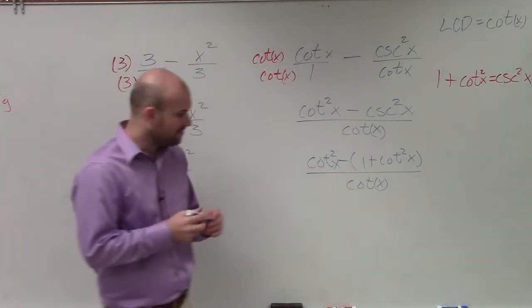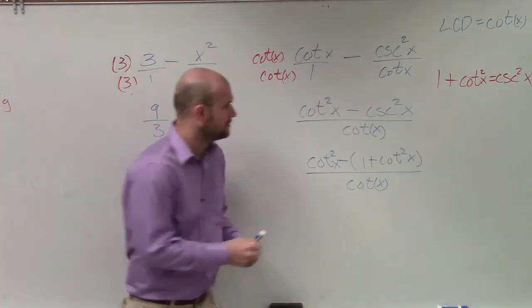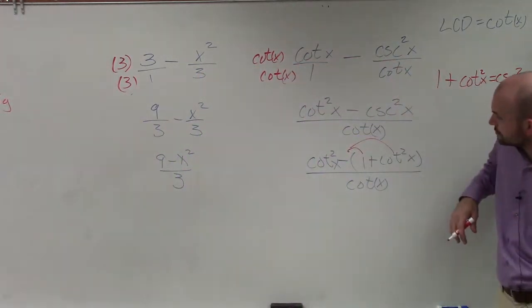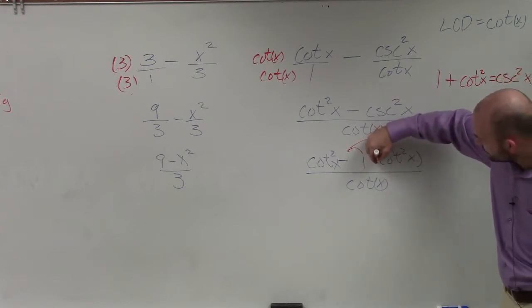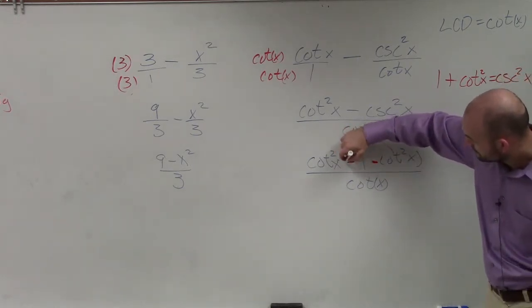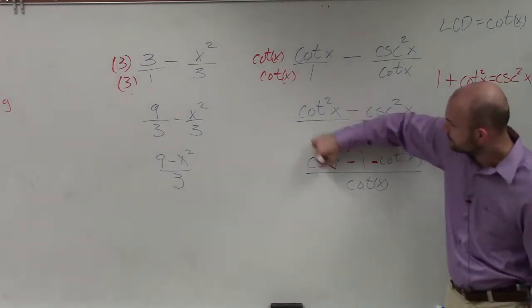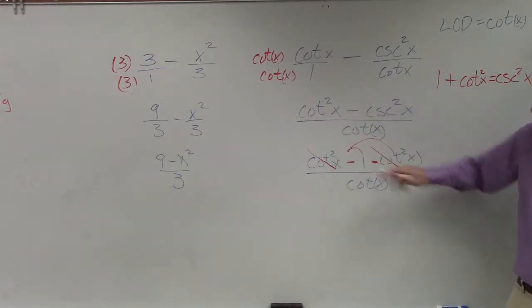Now, by applying distributive property, that's now going to be subtraction. And that's now going to be a subtraction. So now I have cotangent squared minus cotangent squared. Well, that subtracts to 0. And then I have negative 1.